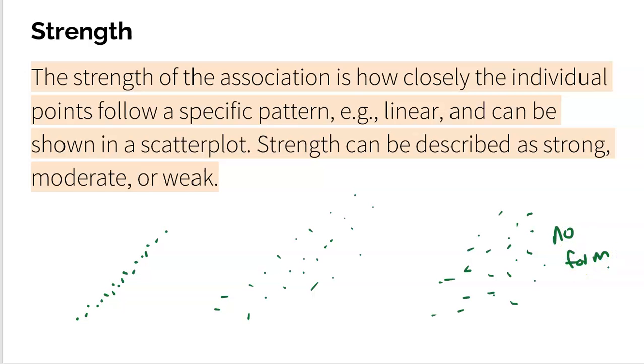And yeah, that's an example of no form. Like it's not curved, it's not a line, it's just like a scatter of bees. That would be no form and that's going to have a very weak strength.